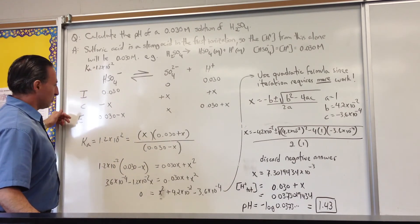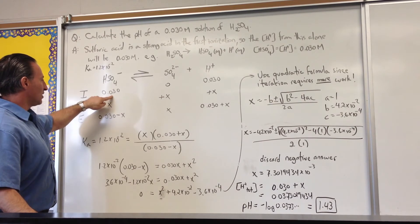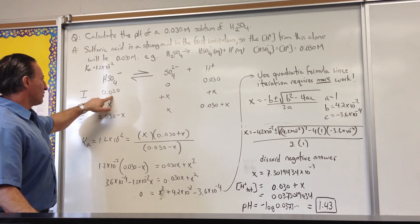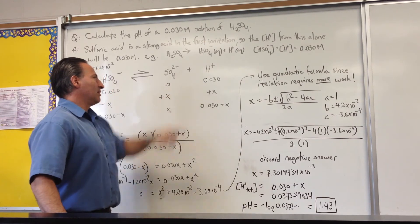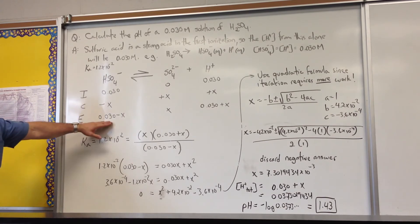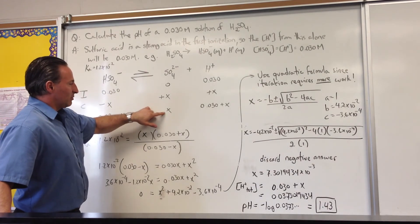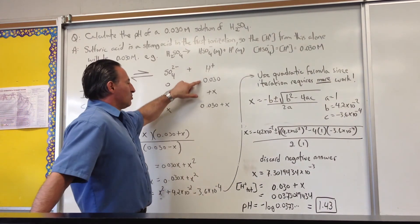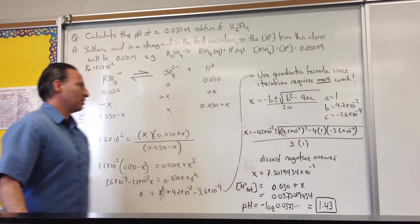If we use an ICE table, it helps to sort it all out. 0.03 at the outset from the first 100% ionization of the strong acid. At the outset there's 0 sulfate and 0.03 molar H⁺ concentration. An amount X of bisulfate dissociates, so your equilibrium condition is this. Sulfate goes from 0 to plus X, so equilibrium becomes X. The original 0.03 has an extra X added to it, so equilibrium is 0.03 plus X.